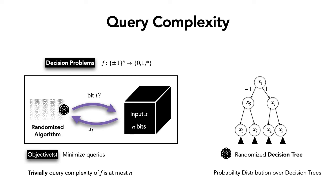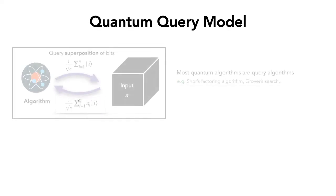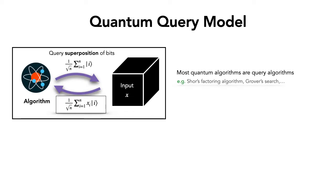This model is exactly the same as the decision tree: you ask for a bit x1, depending on its answer you ask for another bit, and so on. A quantum algorithm also interacts with the input as a black box, but it can query input bits in superposition, and the answer comes back in superposition. This is a natural model since almost all quantum algorithms we know of are query algorithms, and the number of queries serves as a good proxy for runtime.